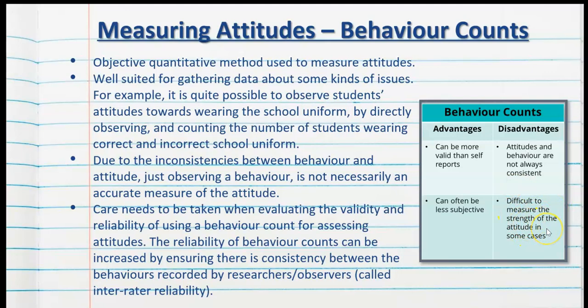It can also be difficult to measure the strength of the attitude in some cases. For example, observing a maths class, it would be difficult just by looking at students working through questions to know how much they really love or hate maths. Additionally, behavior counts give us numbers but don't reveal the subjectivity — because we are measuring attitudes, we want to find out the reasons why people have them, and objective quantitative data doesn't provide that information.